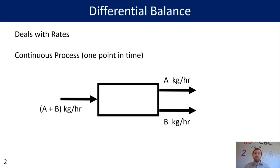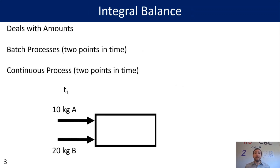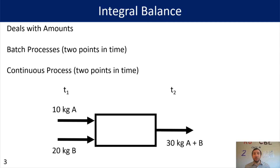In addition to a differential balance, you can also have an integral balance. An integral balance deals with amounts and is commonly used for batch processes where you have two points in time, and it can also be used for continuous processes when you have two points in time. So we may have at time 1: 10 kilograms of A and 20 kilograms of B entering this reactor, and then we look at time 2 where we have 30 kilograms of A and B in some amount — which might be the same or different if this is a reaction vessel.